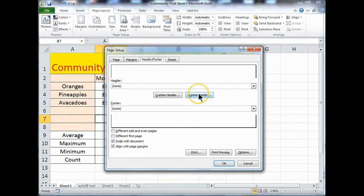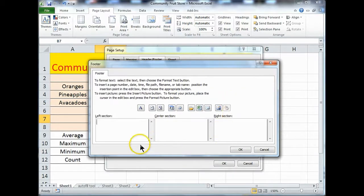Let's click onto custom footer. When you do that, you have three sections for adding a footer. You can add it in the left section, the center, or the right side.